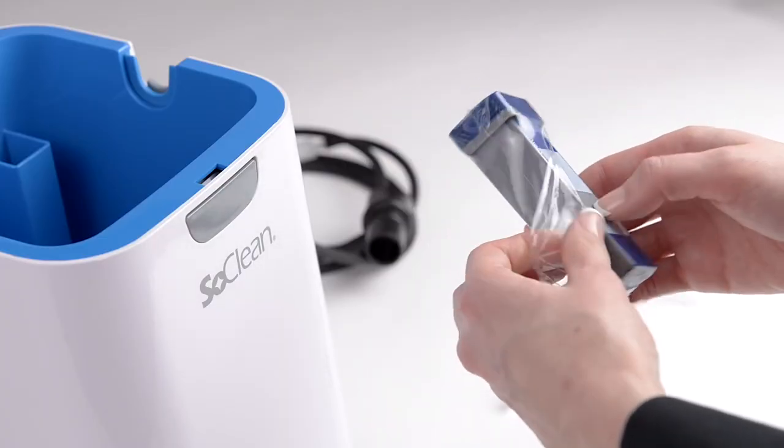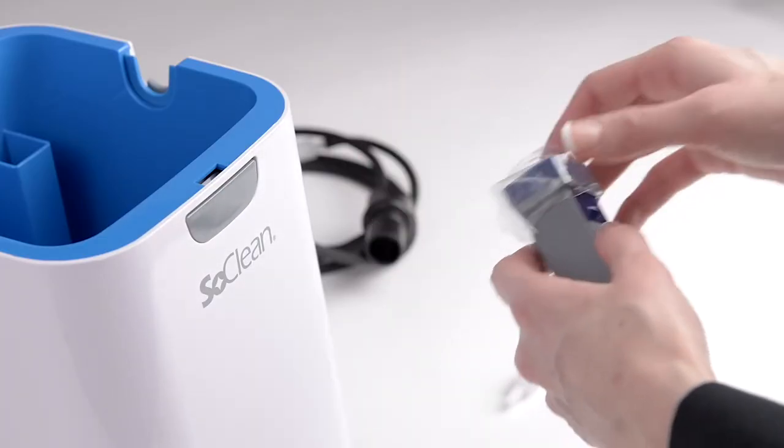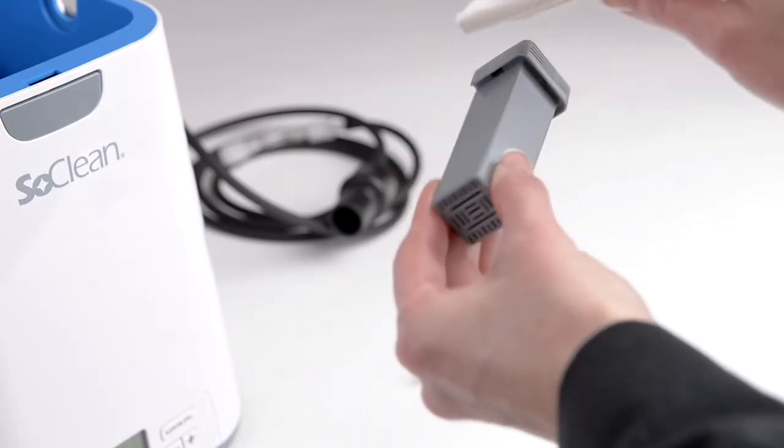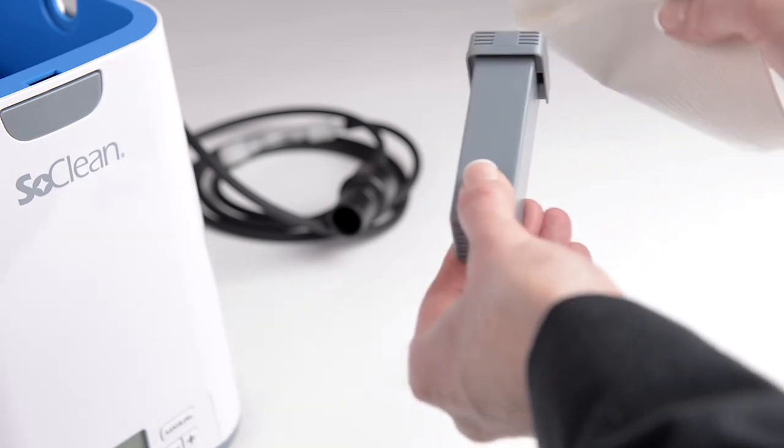Remove all protective plastic and tape from the new filter. You may see some black particles on the filter or on your hands. This is normal from the settling during shipping and can be wiped off.